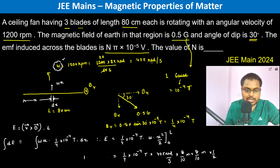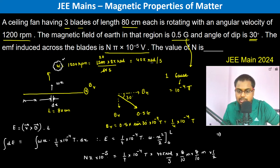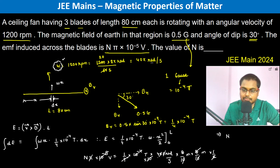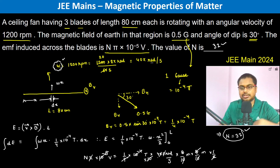Calculating the numerical value: 4 into 2 is 8, which cancels. Pi cancels, giving 10 to the power minus 5. Then the 10s cancel, and 4 into 8 is 32. Therefore the value of n is 32, and the final answer is 32.